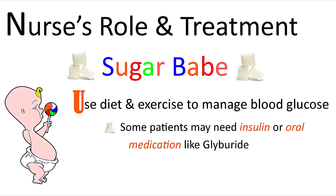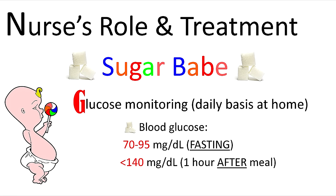G is for glucose monitoring. The pregnant mom would want to monitor her blood glucose at home on a daily basis. As a general rule of thumb, her blood glucose during fasting periods should be anywhere between 70 to 95 milligrams per deciliter. Then after she's had a meal, about one hour after, you would want it to be less than 140 milligrams per deciliter — but of course within normal range above 70, because we don't want her to have hypoglycemia.